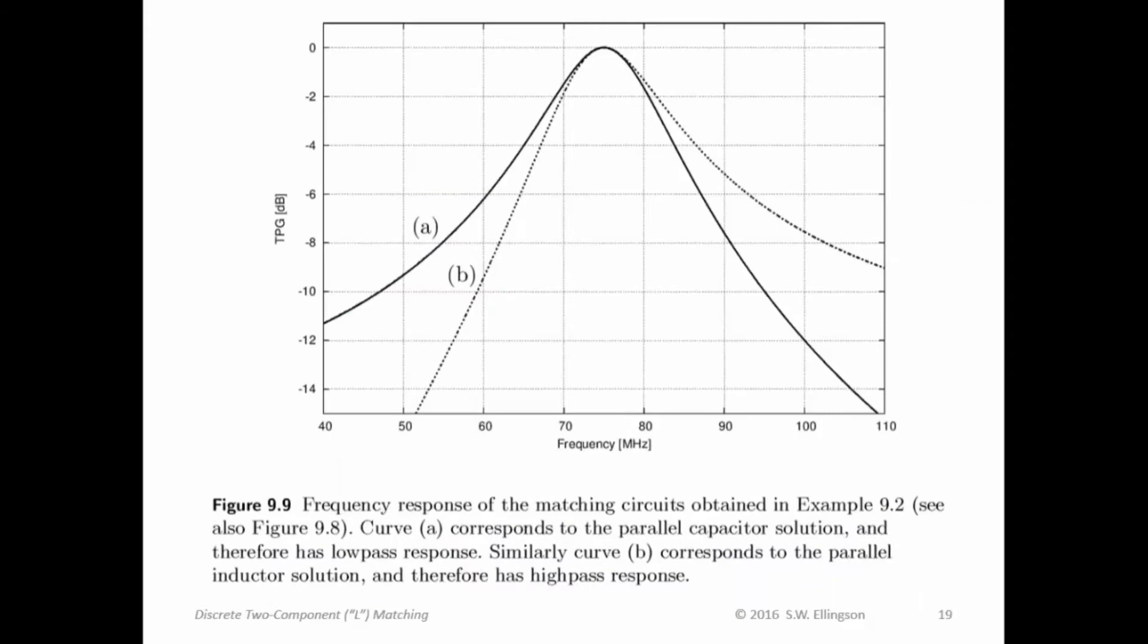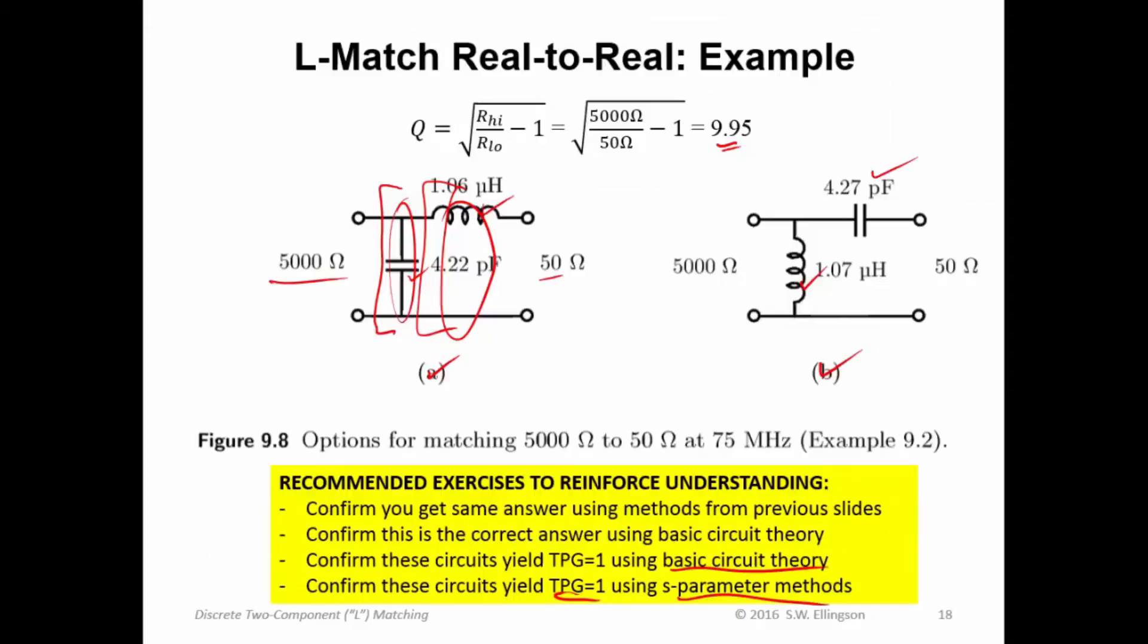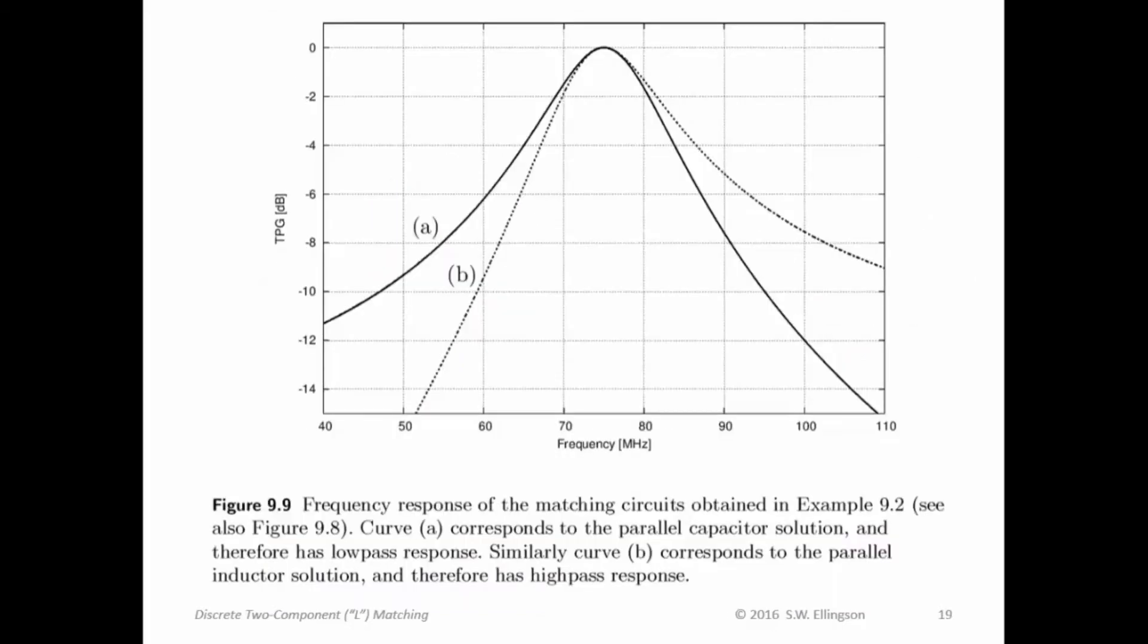So I promised I'd say a little bit about bandwidth. In these two circuits that we came up with, they both have frequency responses. In other words, the TPG is 1 only at 75 megahertz. At all other frequencies, the TPG is going to be less than 1. And we can confirm that. We can actually compute the TPG. By the way, once again, I suggest that you do this. You can recreate this plot. You should be able to do that.